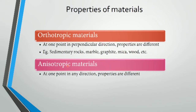Anisotropic materials: at one point, in any direction, properties are different. That is what defines anisotropic materials.